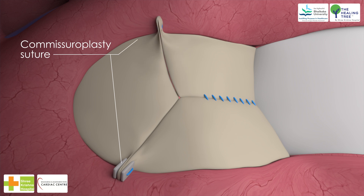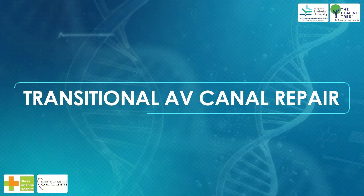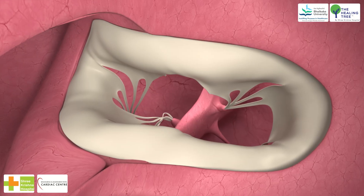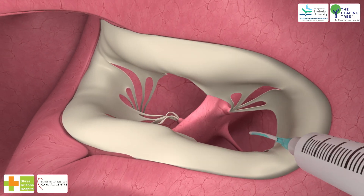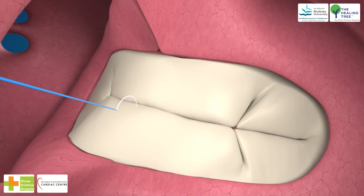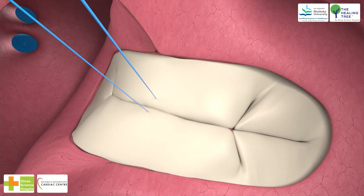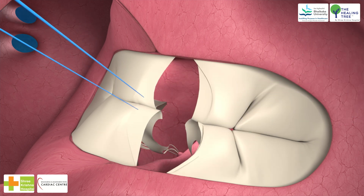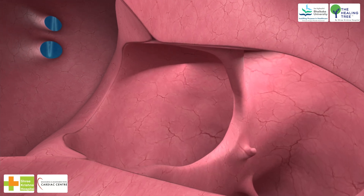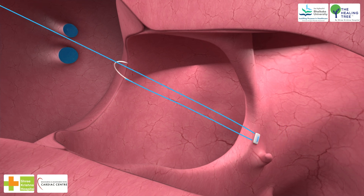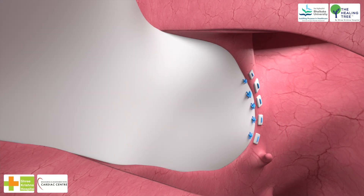If there is central incompetence following cleft closure, an annuloplasty can be performed by tightening one or both commissures with doubly pledgeted horizontal mattress sutures. Transitional AV canal repair operative steps: (1) the transitional AV canal most commonly includes an interventricular communication at the level of the cleft; (2) closure of the primum ASD component of all forms of AV canal should place the coronary sinus and AV node on the left atrial side of the autologous pericardial patch.